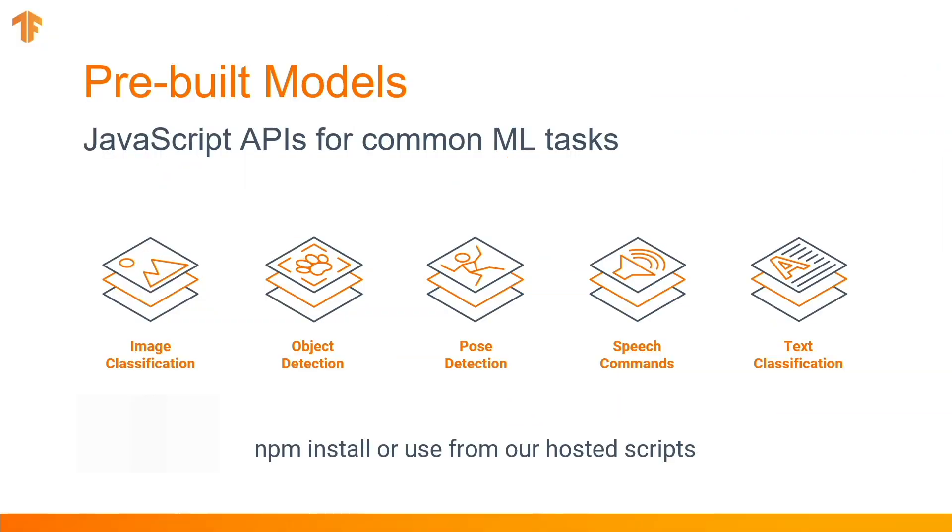TensorFlow.js is a library for doing machine learning in JavaScript, and it brings machine learning into the hands of web developers and other JavaScript developers who don't necessarily have to use Python-based tools. The library is full-featured — we have packaged a whole bunch of models which let you bring machine learning into your application straight out of the box. These are pre-trained models that make it super easy to enhance your web applications.